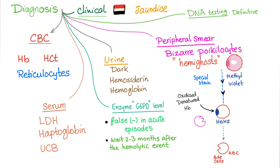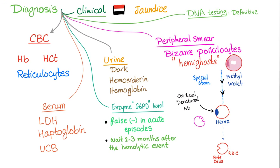Diagnosis starts with the clinical picture — the story of the Egyptian doctor and the kid eating falafel. On CBC: hemoglobin is decreased, hematocrit is decreased. Reticulocytes are usually increased because the bone marrow responds to hemolysis. In the serum, LDH is high, haptoglobin is low, and unconjugated bilirubin is high. The urine is dark due to jaundice, hemosiderinuria, and hemoglobinuria.